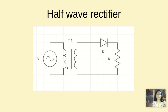This is the circuit diagram of the half-wave rectifier. V1 is an alternating signal — that means an AC signal — which changes its polarity. In the positive half-cycle, this terminal will be positive and this one will be negative. But in the negative cycle, the positive will change into negative and the negative will change into positive.